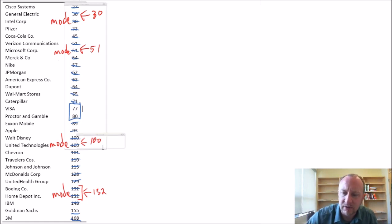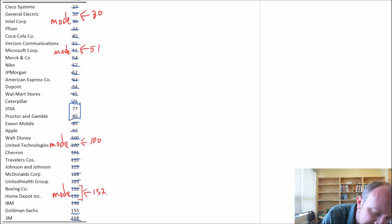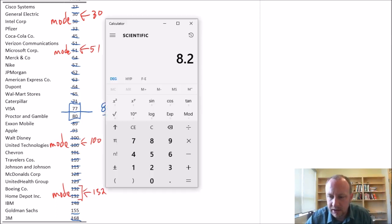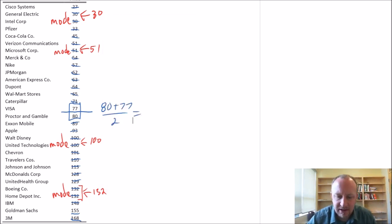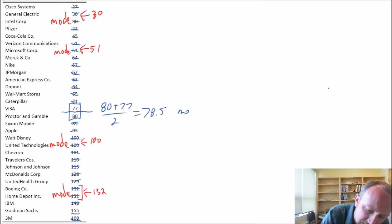What I want to do now is find the middle of those two remaining observations. In this case, this is going to be 80 plus 77 divided by 2. Let me get my calculator. 80 plus 77 divided by 2 gives me 78.5. That's my median.